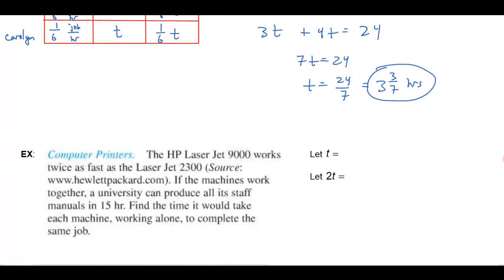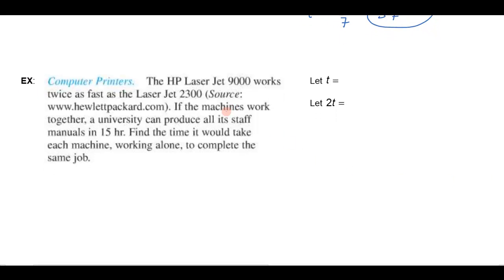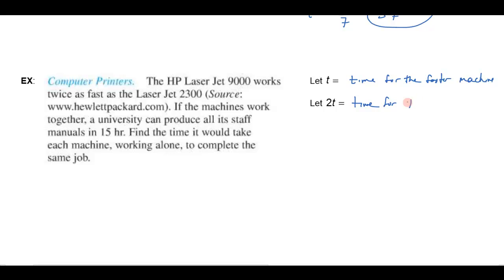Let's do one more problem. This one involves computer printers: one printer works twice as fast as the other, and working together the university can produce all its staff manuals in 15 hours. How long does it take each machine working alone? If I let t be the time for one printer and 2t for the other, 2t is the bigger number, so 2t must be the slower machine. Therefore t is the time for the faster machine and 2t is the time for the slower machine.